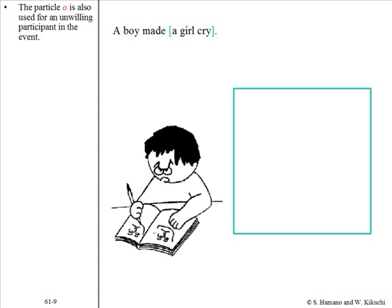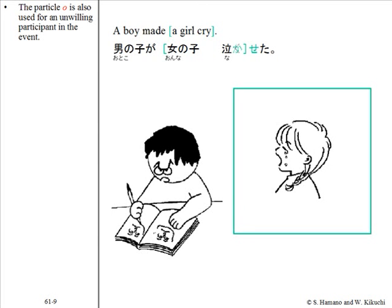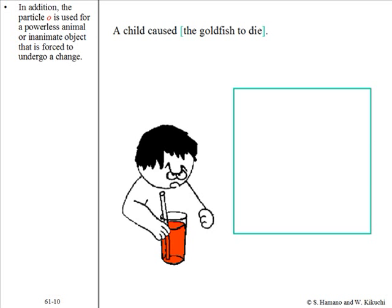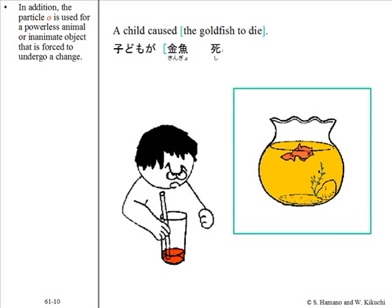The particle O is also used for an unwilling participant in the event: 男の子が女の子を泣かせた. In addition, the particle O is used for a powerless animal or inanimate object that is forced to undergo a change: 子供が金魚を死なせた.